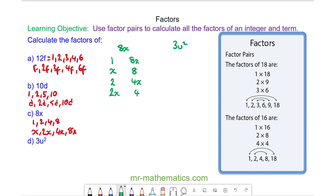And finally for question d. We have 1 multiplied by 3u squared. Or we have u multiplied by 3u because u times u makes u squared. Or we have u squared multiplied by 3. And these are all the different combinations or factor pairs of making 3u squared.